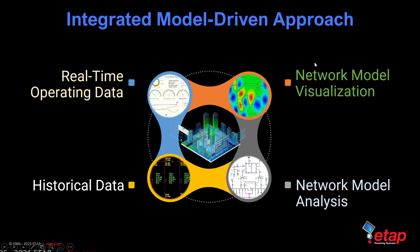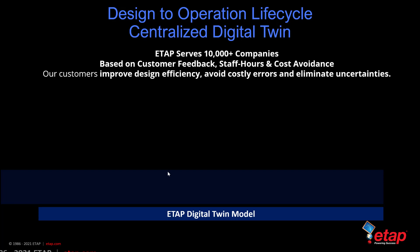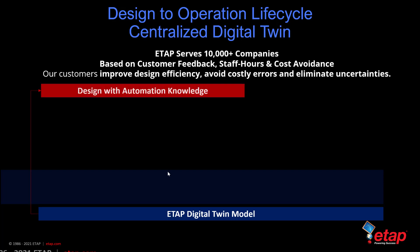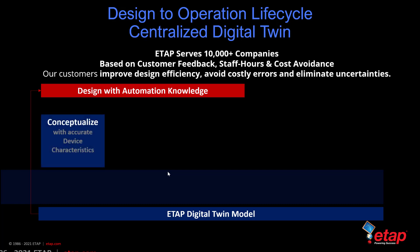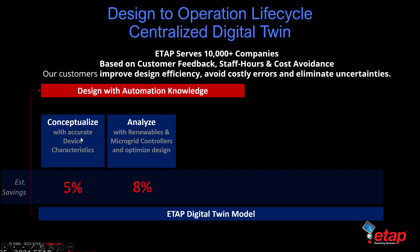The integrated model-driven approach by ETAP allows this to happen, combining the digital twin model with network model analysis, intelligent visualization, and from an operations perspective, real-time and historical operating data. Going from design to operation using a centralized digital twin allows us to design the system with automation knowledge, conceptualizing with accurate device characteristics such as PV, energy storage, wind, fuel cells, and other capabilities — giving a conservative saving of 5% by including these accurate device characteristics during the conceptualizing phase. We can then analyze the system with renewables and microgrid controllers to further optimize the design by right-sizing components based on microgrid controller behavior.